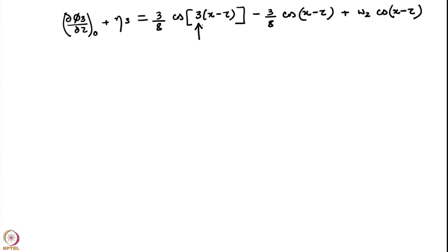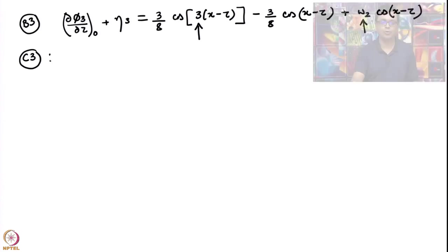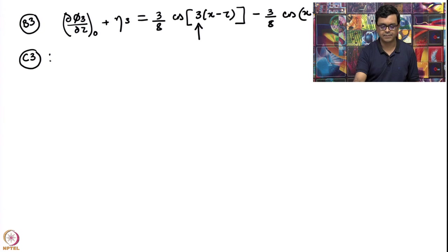This is an outcome of the fact that we have cos³ and sin³ quantities at order epsilon cubed, so we get products which are the cube of the primary. The primary is cos(x−τ), and so we are getting cos³ and sin³ which can be expressed in terms of cos(3(x−τ)) and sin(3(x−τ)) — a third harmonic, again a nonlinear effect. This is equation B3 with the functional form of the right-hand side worked out.